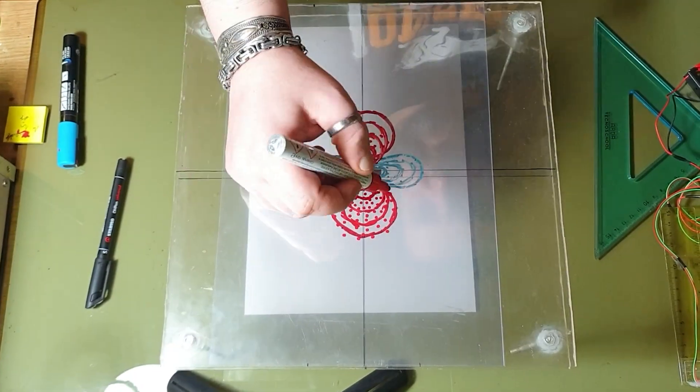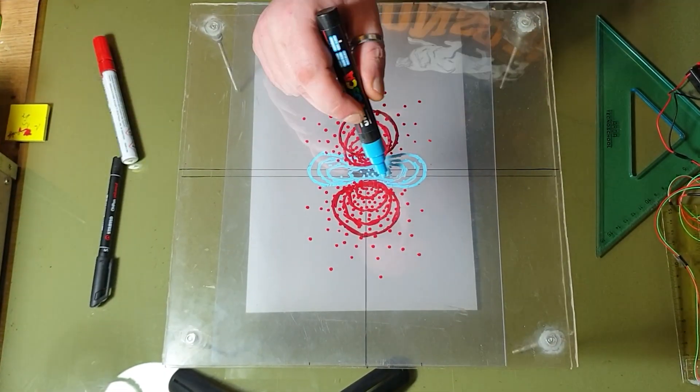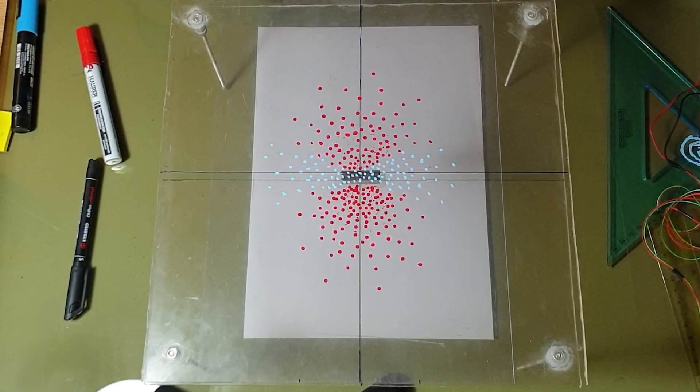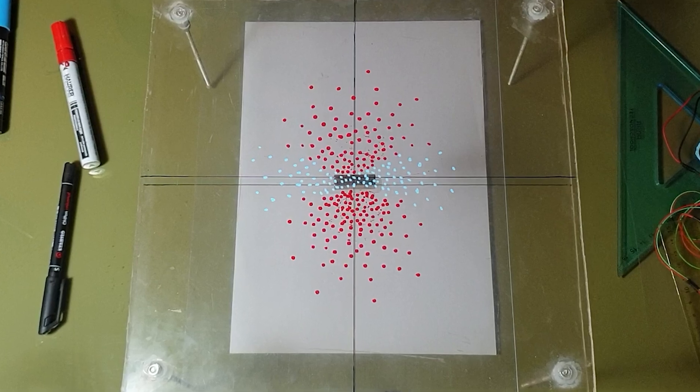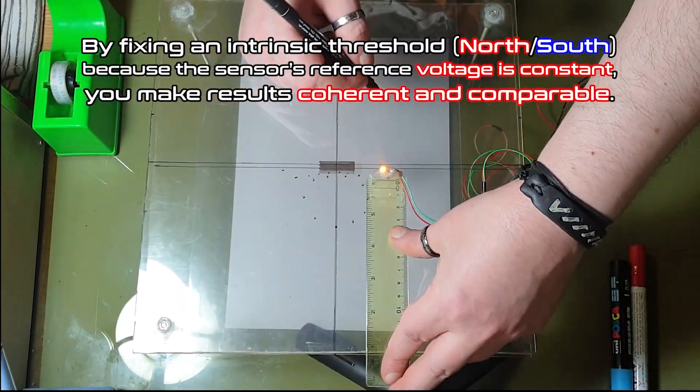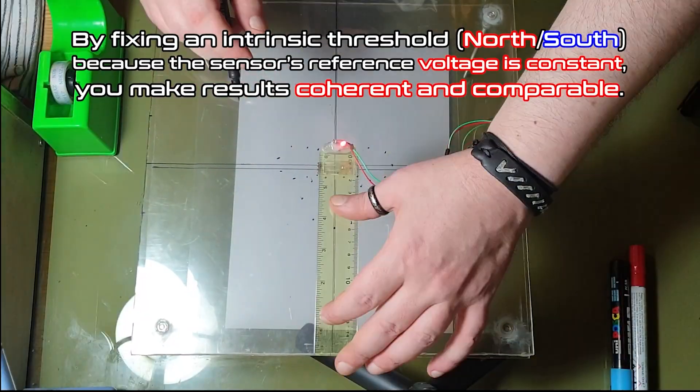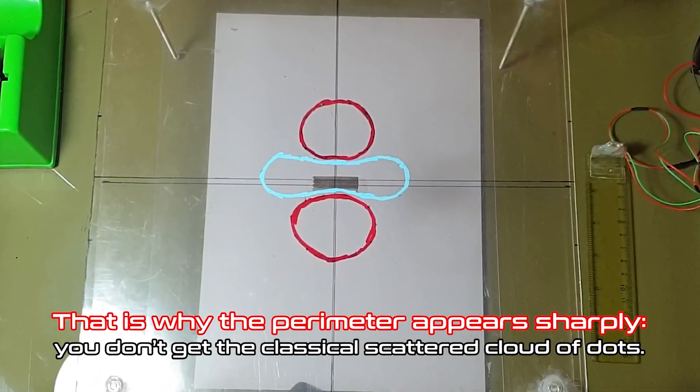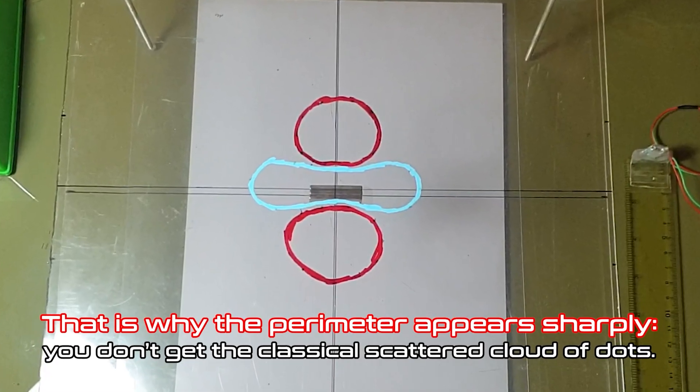Important! If instead you keep the raw analog values, different voltages without thresholding, you obtain a distribution that is hard to visualize. By fixing an intrinsic threshold, north-south, because the sensor's reference voltage is constant, you make results coherent and comparable. That is why the perimeter appears sharply. You don't get the classical scattered cloud of dots.